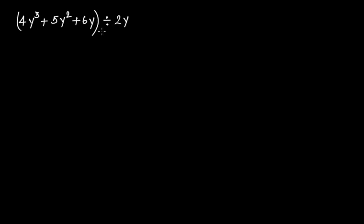You can do it by two different ways — let me show you how. Basically this is 4y³ + 5y² + 6y divided by 2y. You can write this as a fraction with 2y in the denominator.